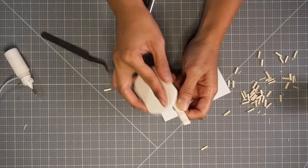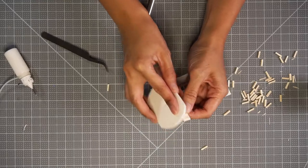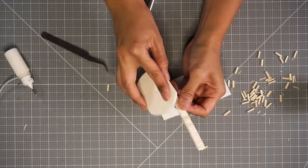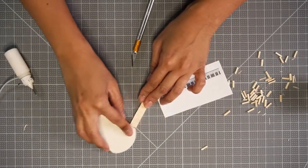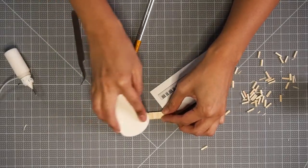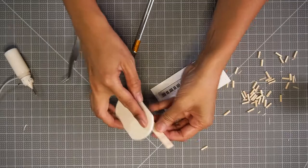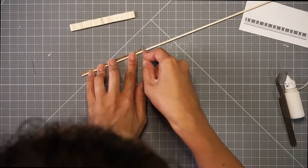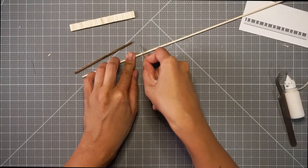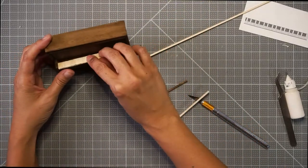I'm sanding down the wooden keys just to smoothen it out a little bit. And these are the trimming details that's going to go around the keys. This is what the keys will be embedded in and kind of secured within.